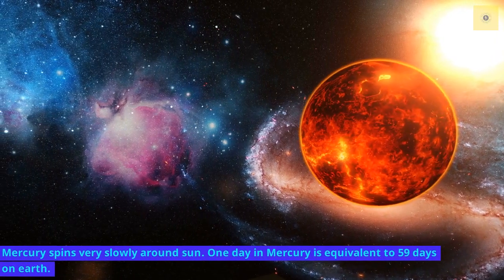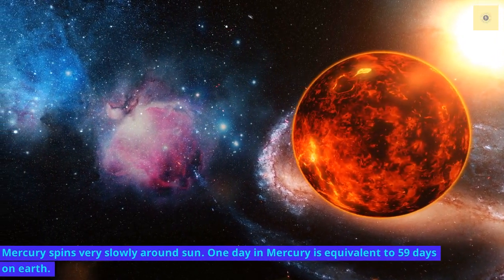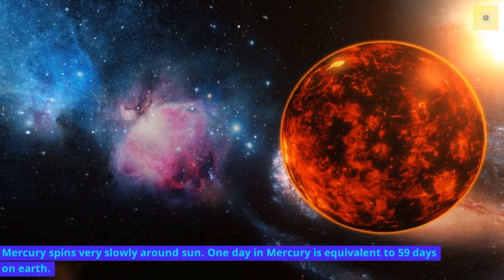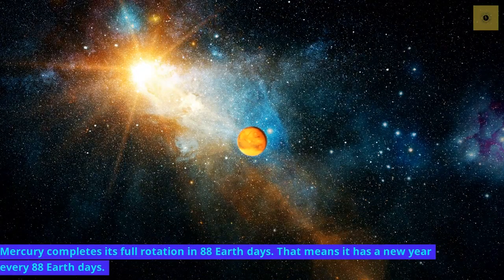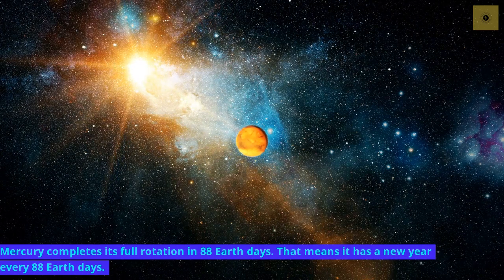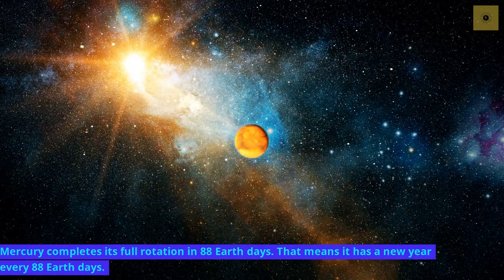Mercury spins very slowly around the Sun. One day on Mercury is equivalent to 59 days on Earth. Mercury completes its full rotation in 88 Earth days. That means it has a new year every 88 Earth days.